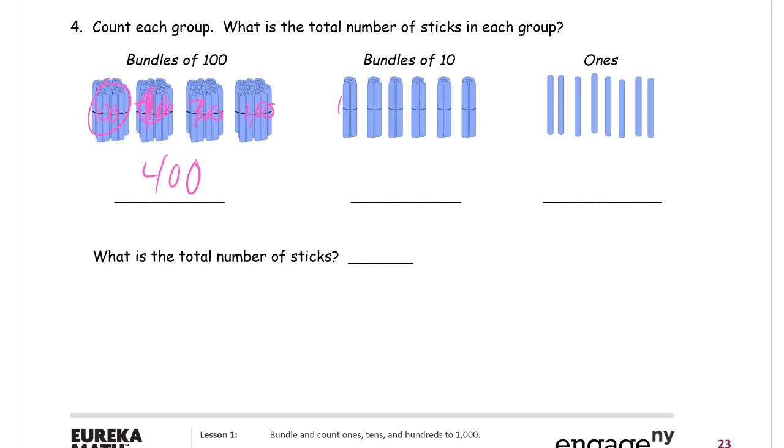And bundles of 10. We count these by tens, right? There's 10 here. There's 10 sticks there. There's 10 there and 10 there and 10 there. So we count 10, 20, 30, 40, 50, 60.